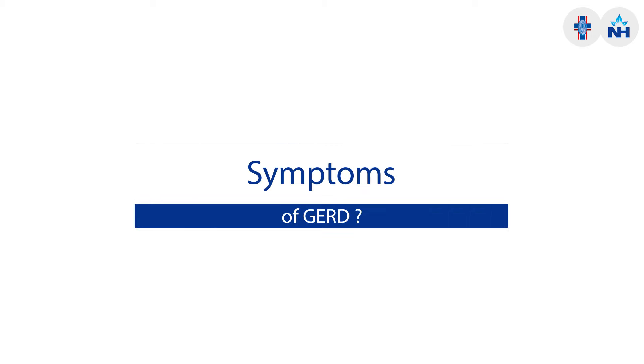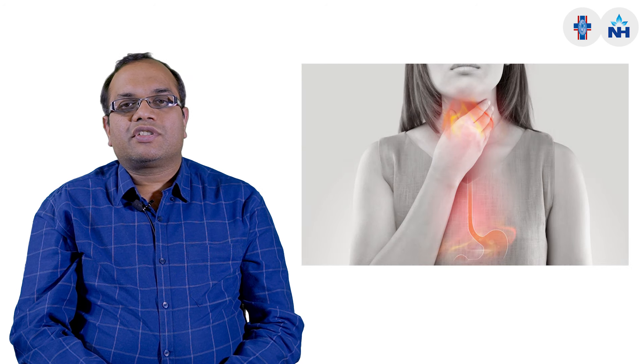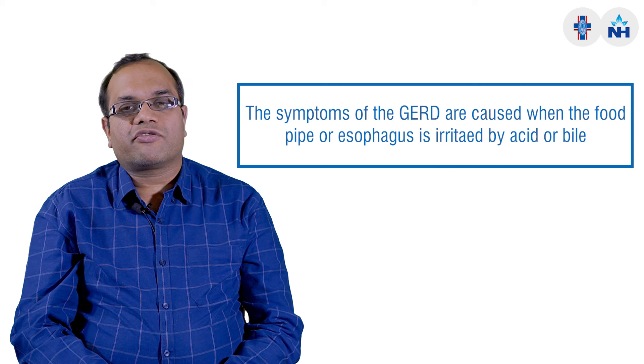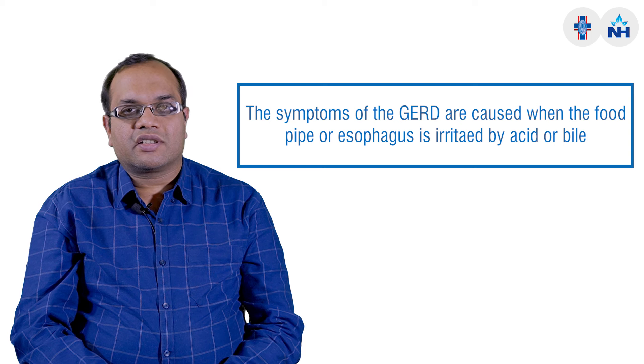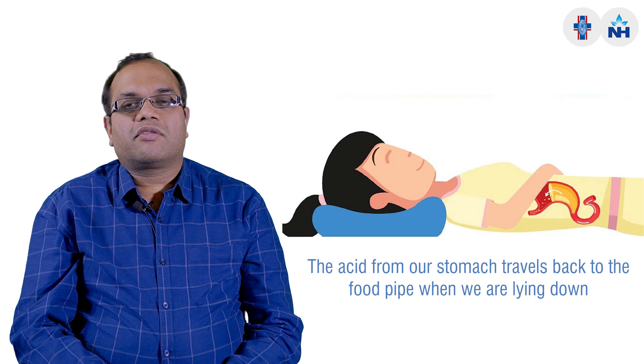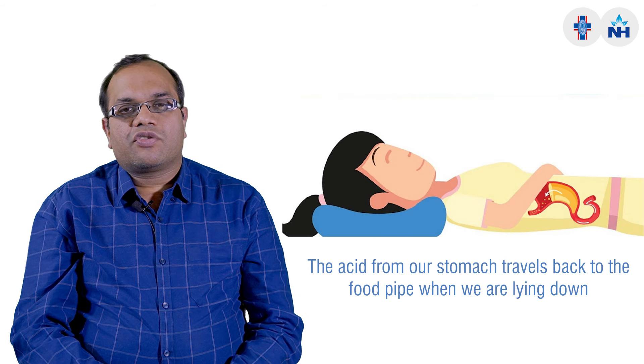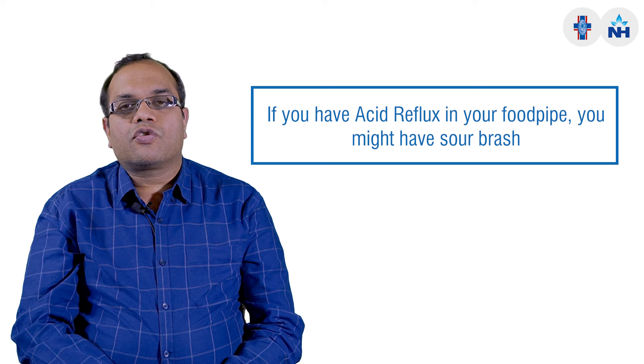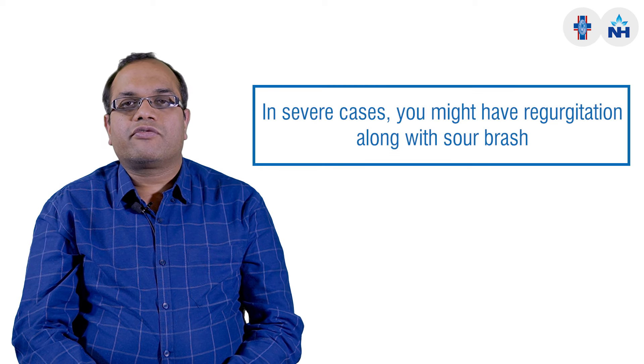Now coming on to the symptoms of GERD. We have to understand that our food pipe is not meant to sustain acid. The symptoms of GERD occur because the acid or bile reaching up to the esophagus causes irritation of the food pipe. The main symptom is retrosternal burning, which happens usually after meals or when you are lying down. You can also have water brash into your mouth, and sometimes if symptoms become severe, you can have even regurgitation of food particles into your mouth. These are all due to the lax lower esophageal sphincter.